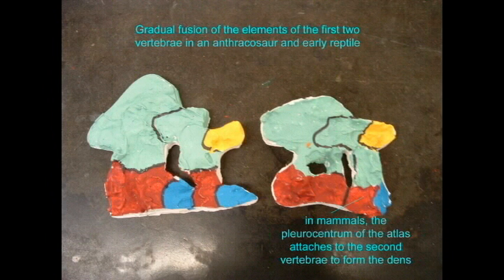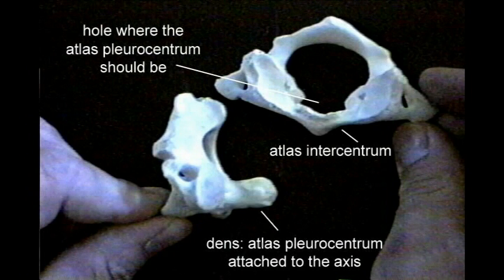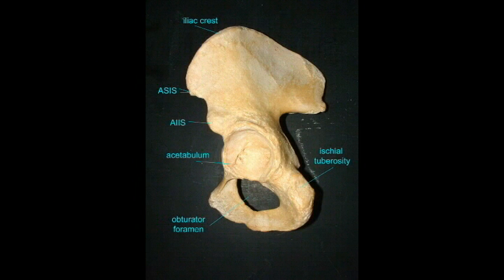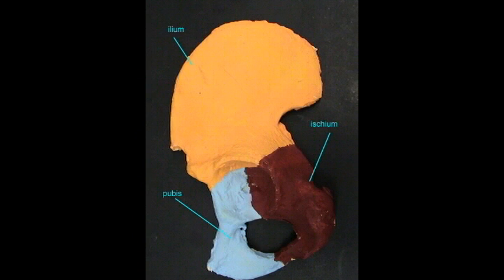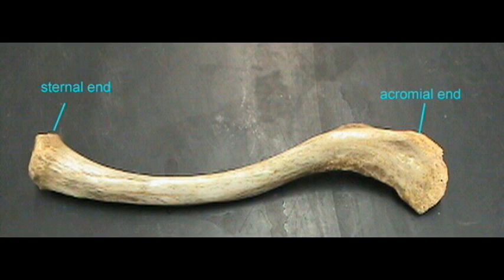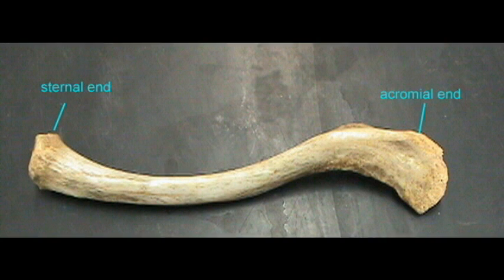The first two vertebrae, the atlas and axis, fuse from a series of parts which reflect their ancestral origin. Although adult hips are composed of a single bone, the oscoxa, the three separate components of this bone — ilium, ischium, and pubis — prior to adulthood are the same separate bones possessed by most tetrapods. The clavicle also forms from the fusion of multiple centers, reflecting its ancestral origin.